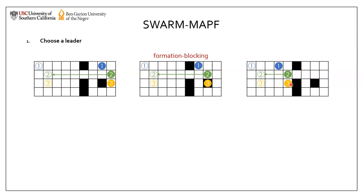We use the number of formation blocking locations to evaluate how good a leader's path is. And we choose a leader among the agents whose path has a minimal number of formation blocking locations.